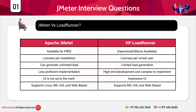The first point is that Apache JMeter is available free of cost — we just have to download and use it. On the other hand, HP LoadRunner is pretty expensive and has various editions available. The next point is that JMeter has licenses for installation, whereas HP LoadRunner has licenses for virtual users. With JMeter you can generate an unlimited amount of load, whereas with HP LoadRunner you have limited load generation capacity.